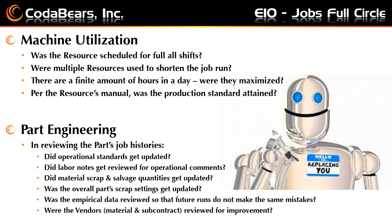Scrap and salvage quantities — did these get updated? If every time you issue a 12-foot bar you have a 2-foot drop, and it's a brass bar, that's pretty valuable. Most systems I walk into, people aren't even using these fields — they leave them blank or say it doesn't matter, they just put it in the scrap bin. Making sure scrap is captured and credited back to the job is important. The overall part scrap setting — are these getting updated? All of this data is being captured in the system, but we're not using it to prevent making the same mistake next time we run the part.